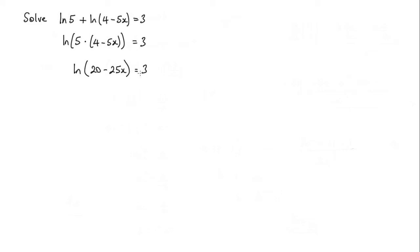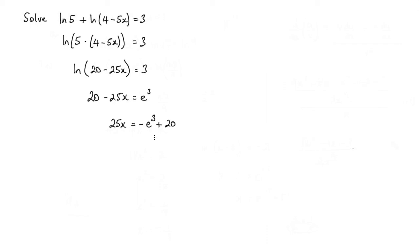Now I need to take the inverse log of both sides here. In other words we've got log to base e here. So we'll have 20 minus 25x equals e to the power of 3. Rearranging this, we have that 25x is equal to 20 minus e to the power of 3. So x is equal to 20 minus e to the power of 3, all over 25.